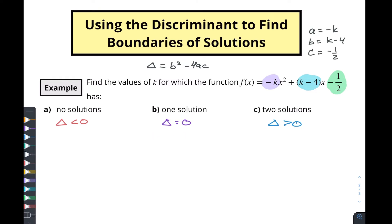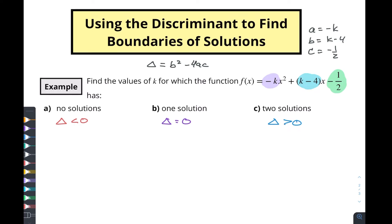So let's put those values into our middle question here, finding our one solution. Zero equals b squared, k minus 4 squared, minus 4 times a, which is negative k, times c, which is negative one-half. So we want to find out where these things equal zero. Let's look at this piece first. We've got negative 4 times negative one-half, so that's gonna be positive two times negative k. So we're gonna have minus 2k over here. And then in here, we're gonna have k squared minus 8k plus 16, and all of that is going to equal zero.